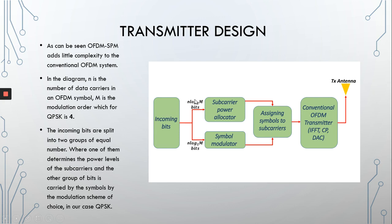For those wondering: N is the number of data carriers in an OFDM symbol, and M is the modulation order, which for QPSK is four, as QPSK has four constellation points, allowing us to transmit two bits per symbol. The difference from conventional OFDM is not very big and doesn't add much complexity; however, it gives us a whole extra data stream that we can transmit.